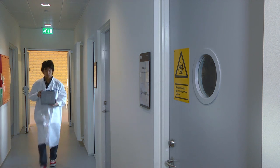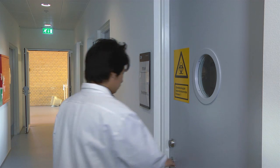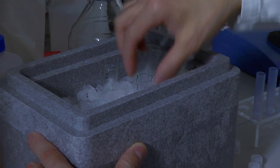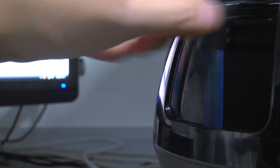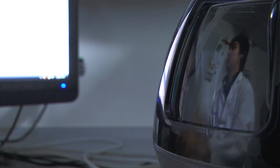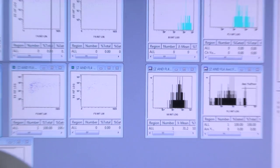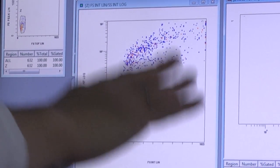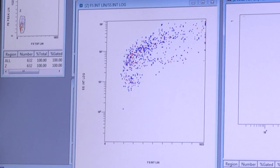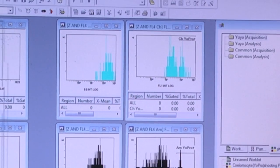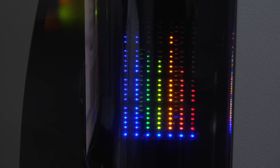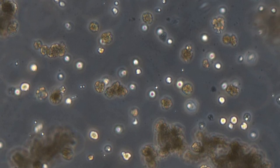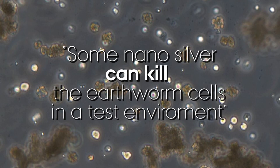Now comes the moment of truth. Will I have useful data? This is so essential in doing research. More often than not, something goes wrong and you have to do the experiments all over again. This time I am lucky. I can see plenty of cells and lots of them are dead. This is in fact an indication that my worm cells have eaten nanosilver particles and some of the cells are actually committing suicide. This result shows that the nanosilver can kill the earthworm cells in a test environment.